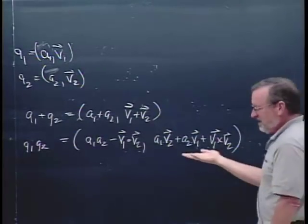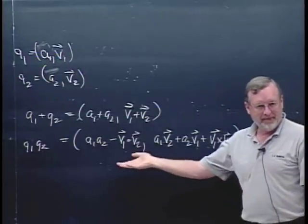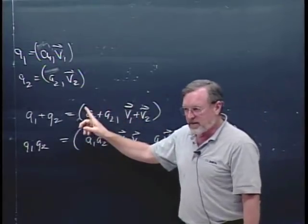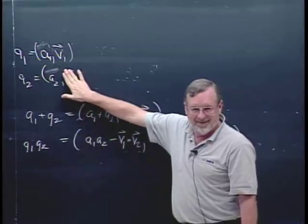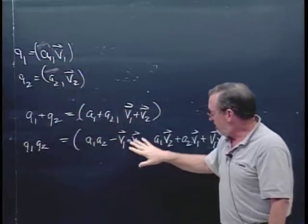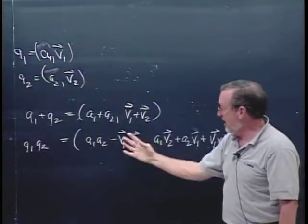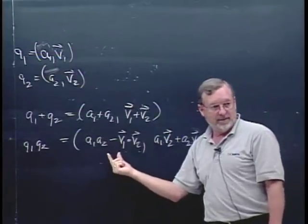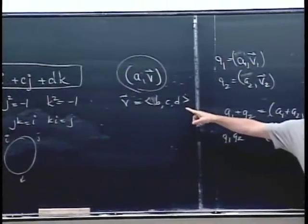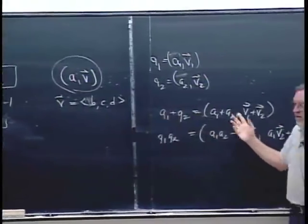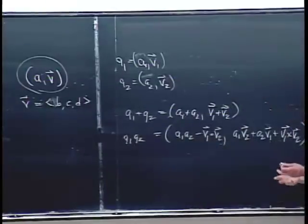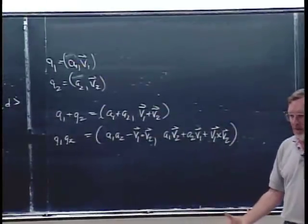If these vectors are zero you get back to the real numbers. And if C and D are always zero, you end up with exactly the complex numbers. So quaternions are an extension of both real numbers and complex numbers.